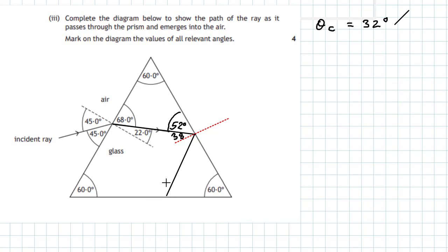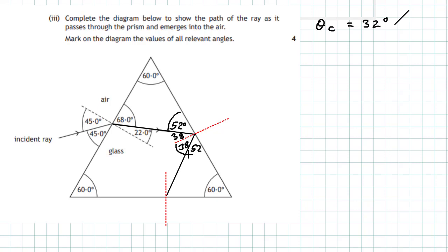We draw another normal at the bottom surface. We then chase the angles again: if the angle of incidence is 38 degrees, then by the law of reflection the reflected angle here must also be 38 degrees. And since the edge and the normal are 90 degrees, 90 minus 38 leaves an angle of 52 degrees — so 52 and 38 add up to give the 90 degrees between the normal and the edge.